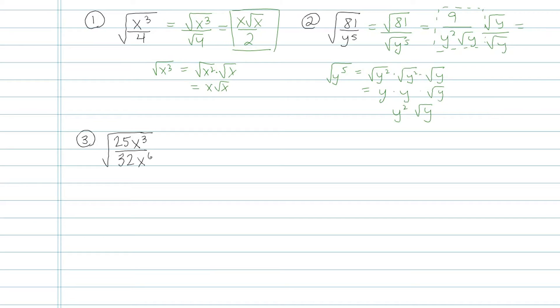So the final answer on top would look like 9 root y. On the bottom I have y squared times y again. So altogether that's y to the third. That looks like it could be simplified. It actually can't. That's my final answer.